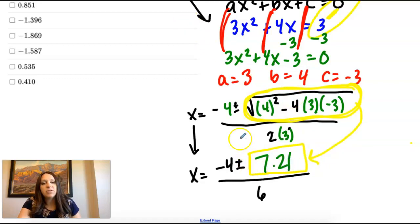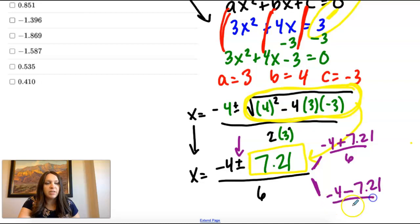So this number becomes 7.21. And then the last step is to make sure we get a plus answer and a minus answer. So I like to split it like this. And I have negative 4 plus 7.21 divided by 6. Negative 4 minus 7.21 divided by 6.